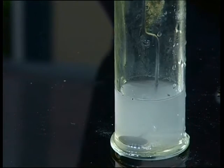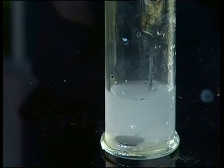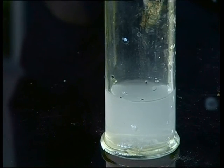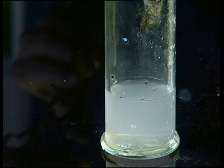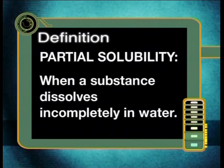When water is added to magnesium oxide, we see that the water turns a milky white. This means that only some of the solid dissolved in the water. We say that magnesium oxide is partially soluble. Partial solubility is when a substance dissolves incompletely in water. We know that magnesium oxide is partially soluble because we can see the little bits of undissolved oxide floating in the water.